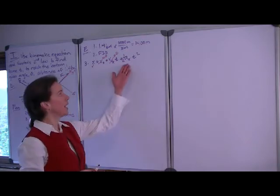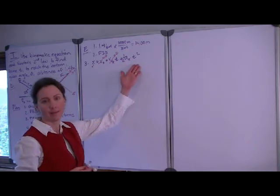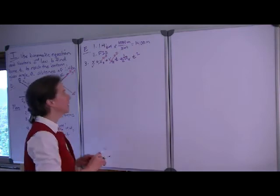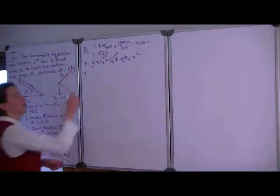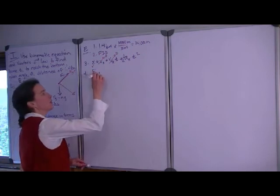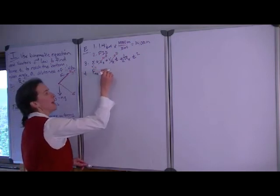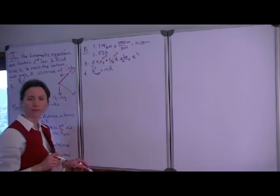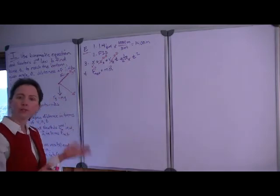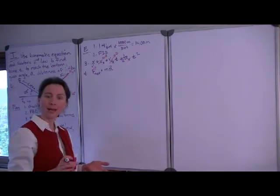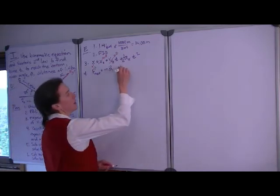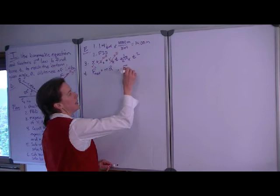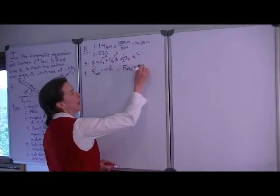However, we don't have the acceleration or the time, and the time is what we want. This is where we need to employ Newton's second law, which says that the net force is equal to the mass times the acceleration vector. Since everything we are interested in in this particular problem is happening in the x direction that we have designated, we can write this as f net x equals m ax.